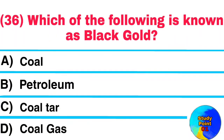Question No. 36. Which of the following is known as black gold? Answer: Petroleum.